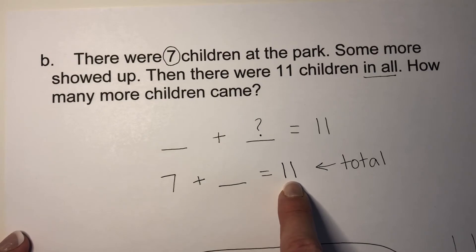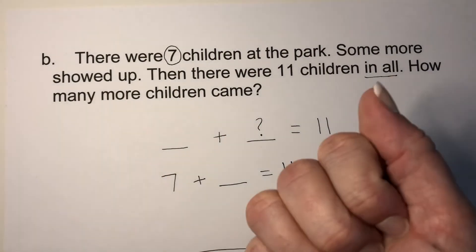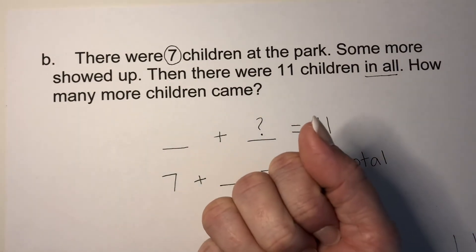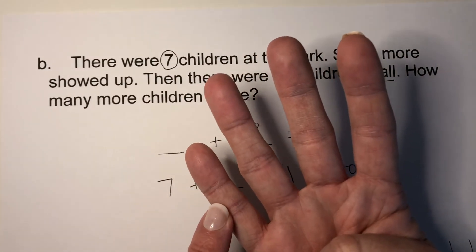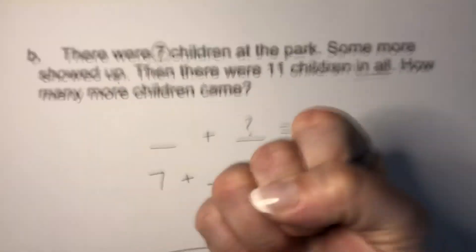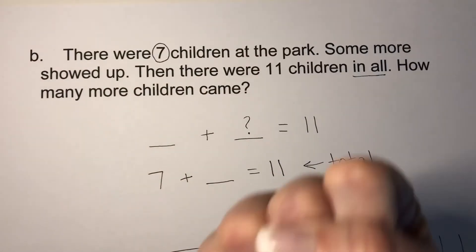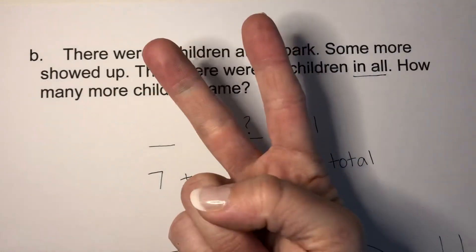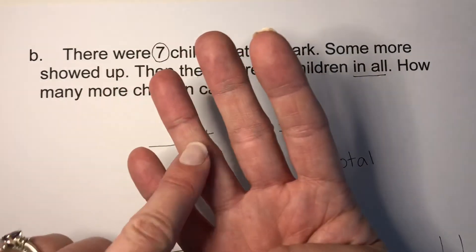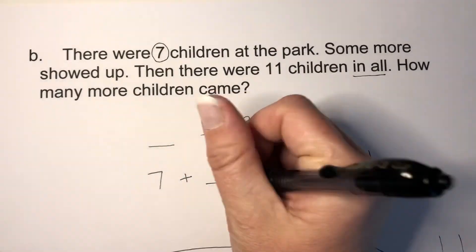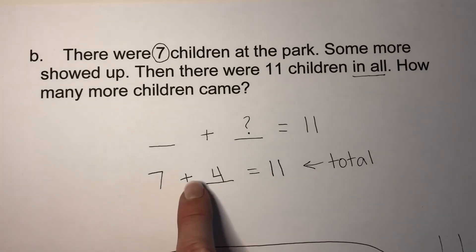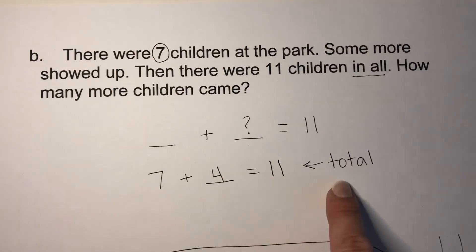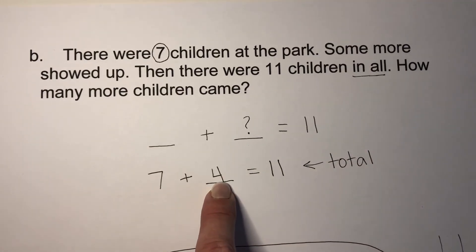Remember, we can start at seven and count up until we get to eleven: seven — notice I close my hand — eight, nine, ten, eleven. One, two, three, four. That was four more children. Seven and four more is eleven. Seven plus four equals eleven, and that's our total. We were missing this number right here. That number is called an addend. When we add those numbers together we get our total.